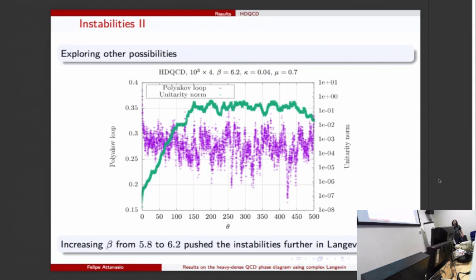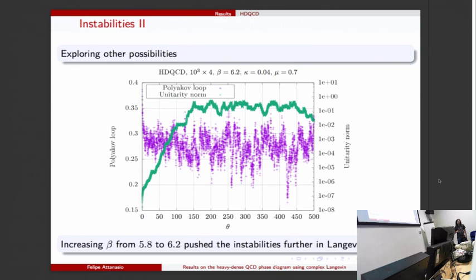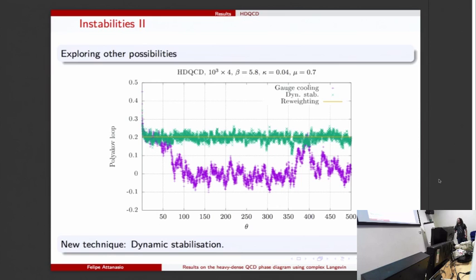Now I'm going to talk about the new ideas we've been testing. This is a work in progress. If there's no time you can ask my colleague - he has a poster outside with more plots and more information. We tried this new idea we call dynamic stabilization which is shown here in green, and this yellow line is the result from reweighting. You can see that using dynamic stabilization there doesn't seem to be any problem at all with the Polyakov loop in this case changing behavior.